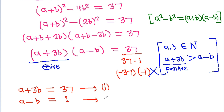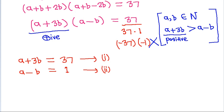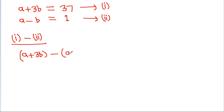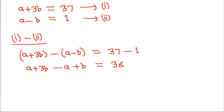This is equation 1 and this is equation 2. If we subtract equation 2 from equation 1, then a plus 3b minus (a minus b) equals 37 minus 1. So 4b equals 36, and a will cancel out. Therefore b equals 36 divided by 4, that is b equals 9.